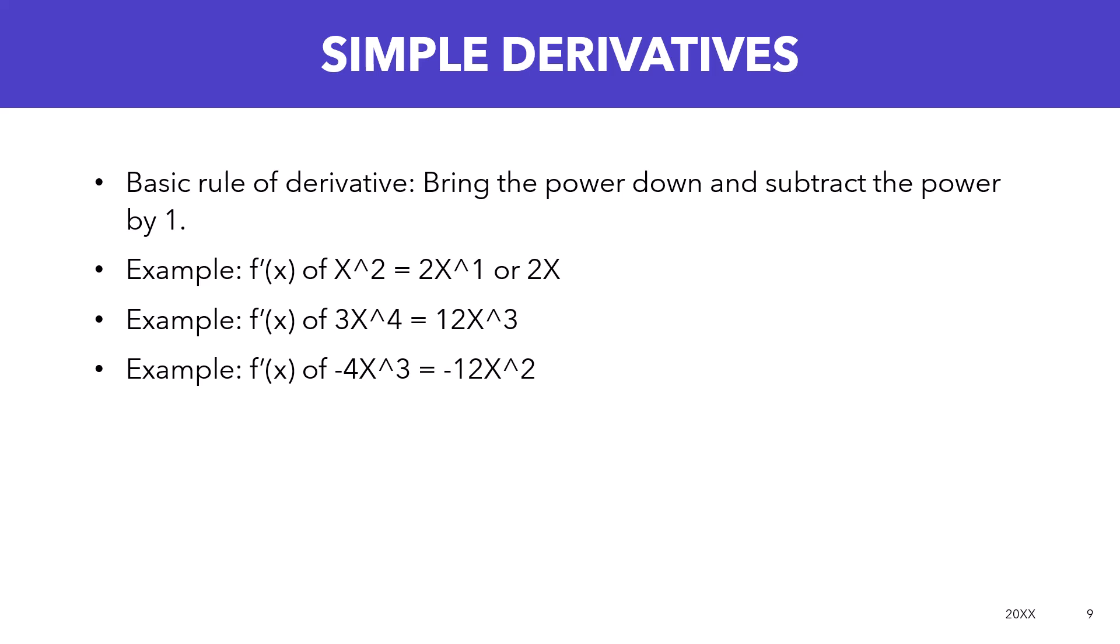So if you have x squared, the derivative of x squared is 2x or 2x raised to the first power. Same thing if you have 3x raised to the fourth. You're going to bring the four down, three times four equals twelve, and that's now raised to the third power, so it's 12x raised to the third power.